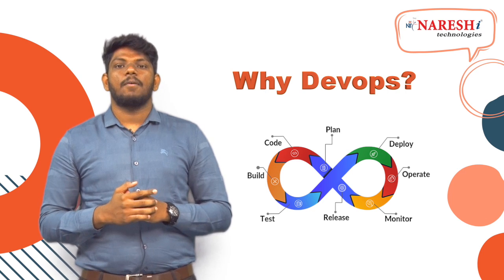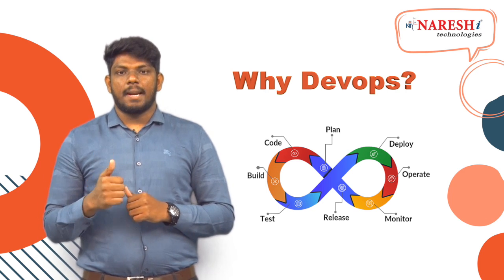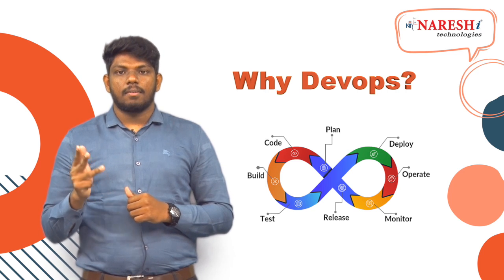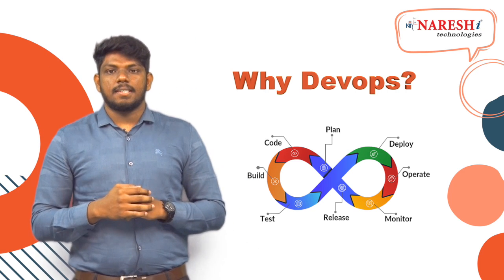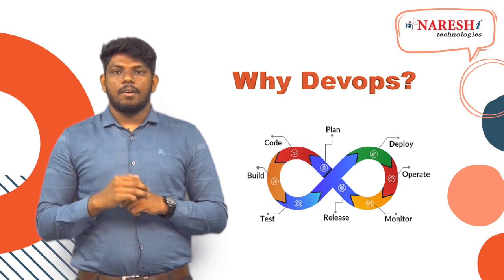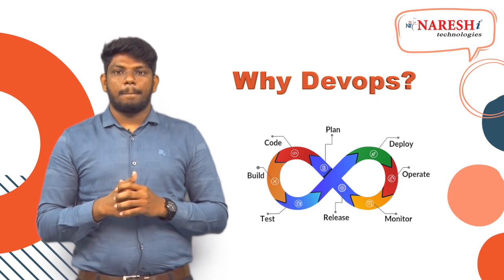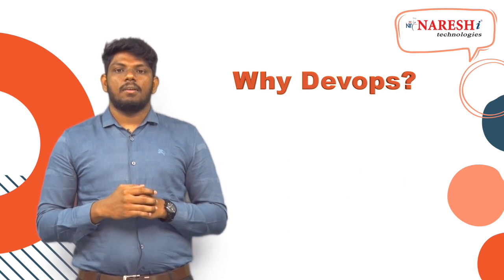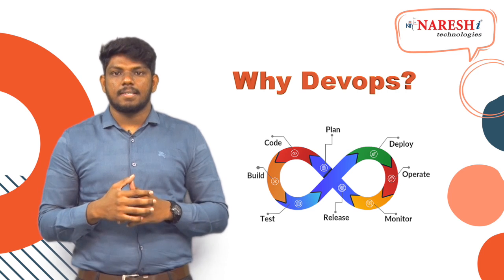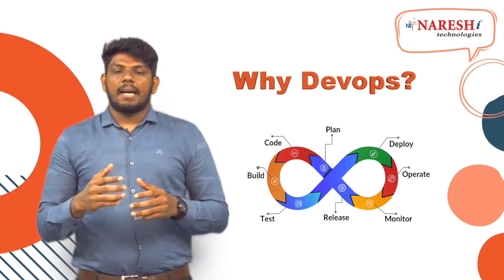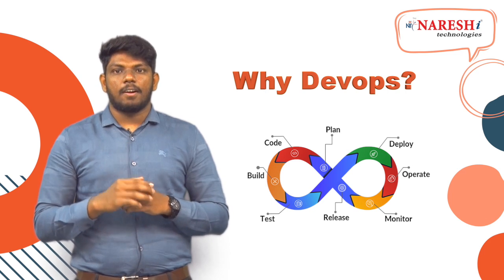Do you need to learn all the tools for DevOps? It is not really necessary because the DevOps lifecycle has eight stages: plan, code, build, test, release, deploy, operate, and monitor. For each stage you only need to learn one tool. For example, for the code stage you can use GitHub, GitLab, or Bitbucket. For the deploy stage you can use Docker, Vagrant, or EC2. You only need to learn one alternate tool per stage depending on which stage you are in.